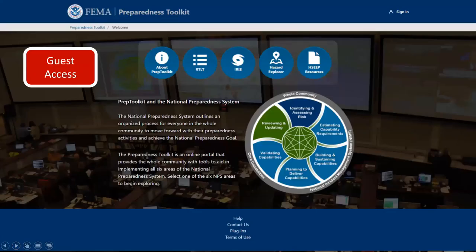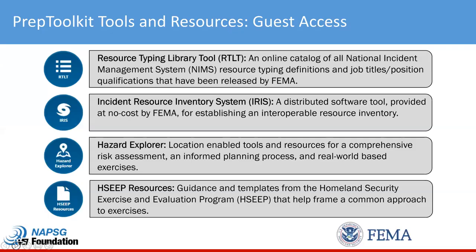If I access Prep Toolkit as a guest, I can access a handful of tools. Most textual information can be accessed using the interactive graphic of the National Preparedness System shown on the right side of the screen, and each of those six NPS areas in the graphic are clickable and allow me to access more detailed information. Links to publicly accessible tools and features are provided across the top of the page. As a guest, I can access four primary tools.